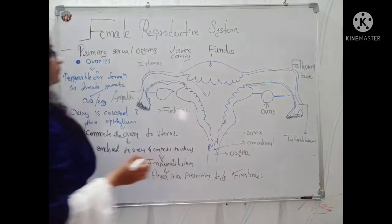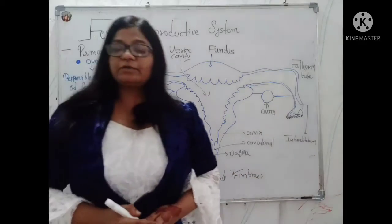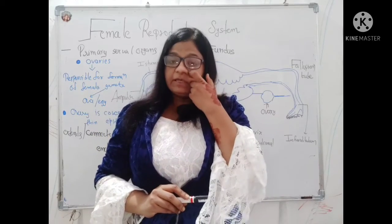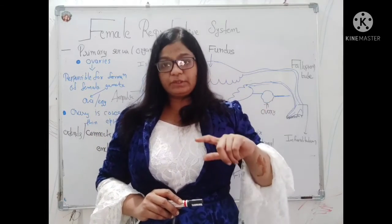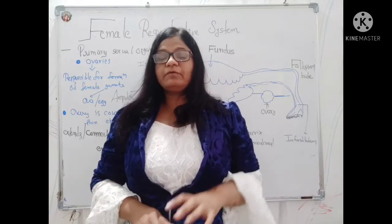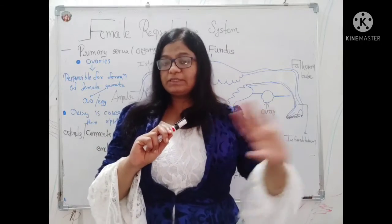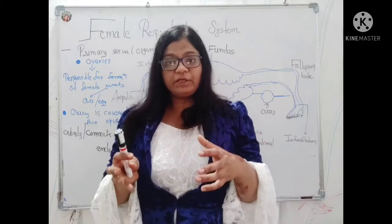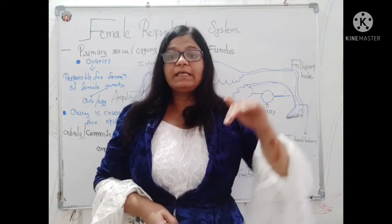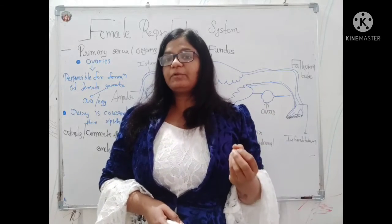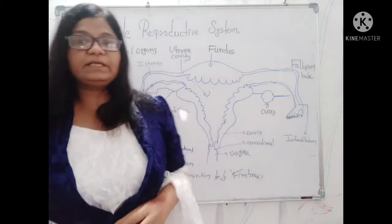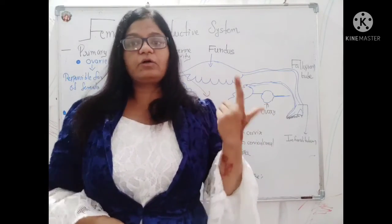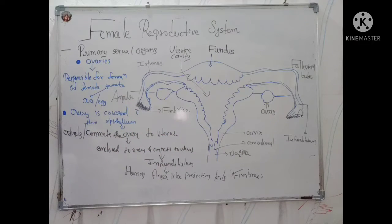So the primary sexual organ of the female reproductive system is the ovary. The ovary is covered with a thin epithelium layer which extends the ovary to the uterus, and the very first part which encloses the ovary to the uterus, extending it toward the peripheral cortex, is called the infundibulum, which has at its end portion finger-like projections called fimbriae.